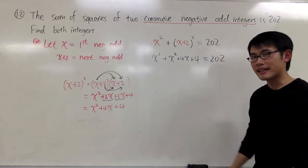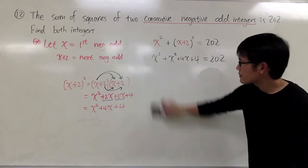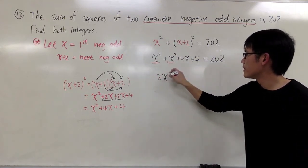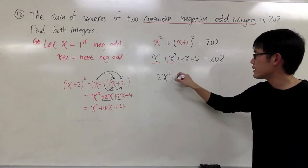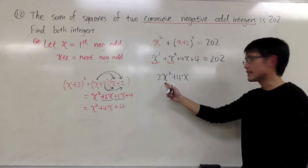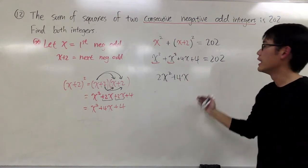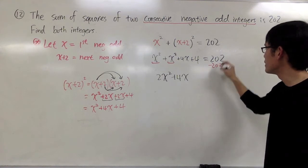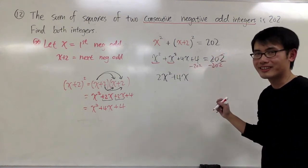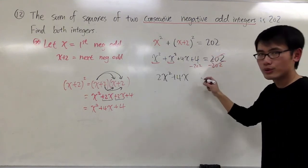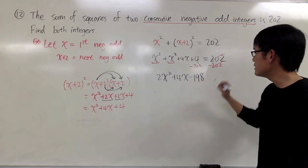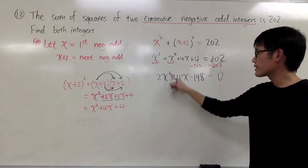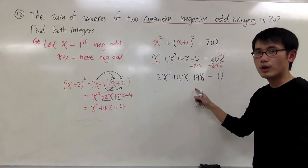And now, we just have to keep combining like terms and see what we can get. I see that I have x squared plus x squared. That will give us 2x squared. And I have plus 4x. But, I already noticed that this is x to the second power. So, the equation is quadratic. Let me move the 202 to the other side so that we can make one side equal to 0. Let me minus 202 here. Cancel this out. And also minus 202 right here. 4 minus 202 will be minus 198. And that will be 0.